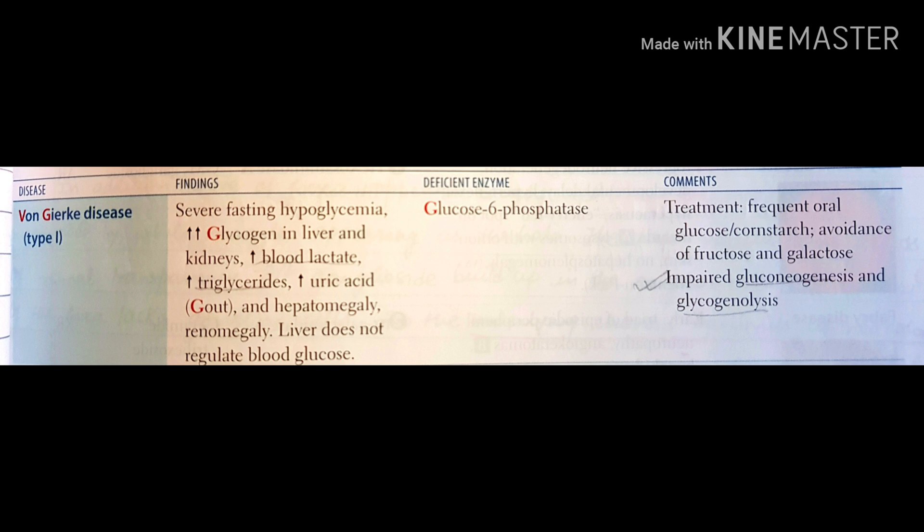In this disease, both gluconeogenesis and glycogenolysis are impaired because both of these pathways require the enzyme glucose-6-phosphatase. So you don't want the patient to fast for a long time — you keep giving frequent oral glucose and corn starch, and you also avoid fructose and galactose.